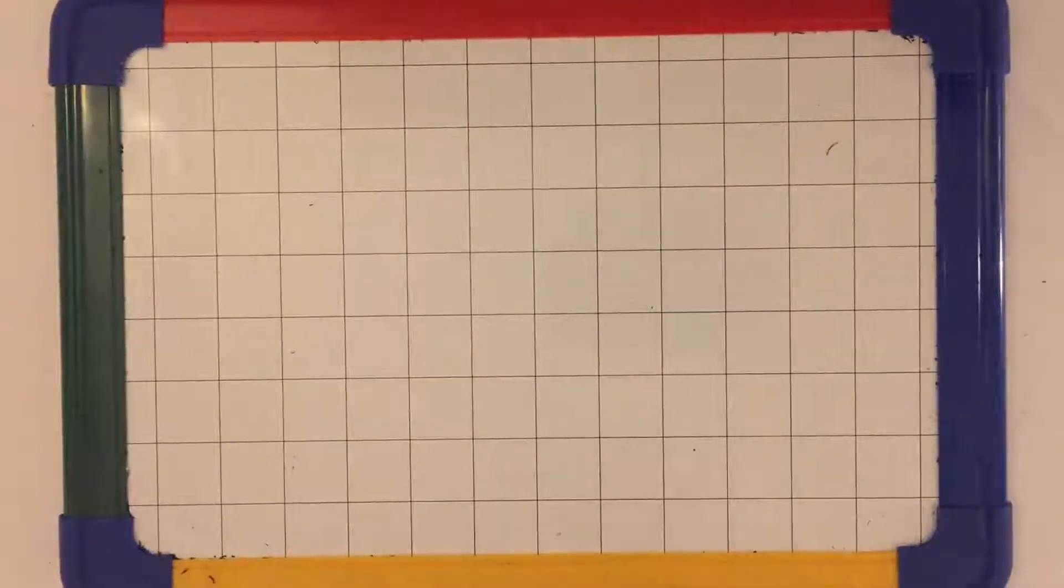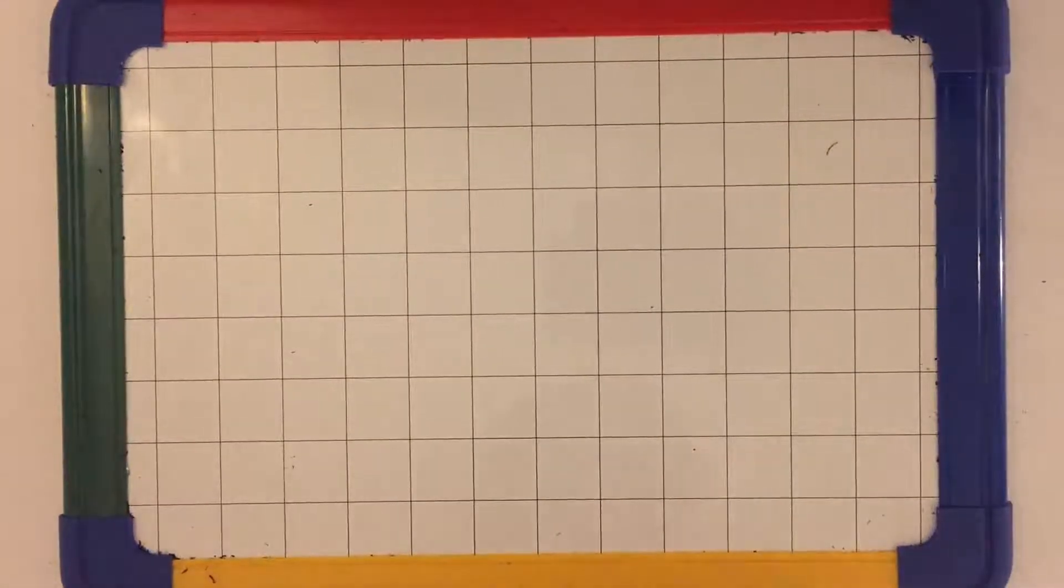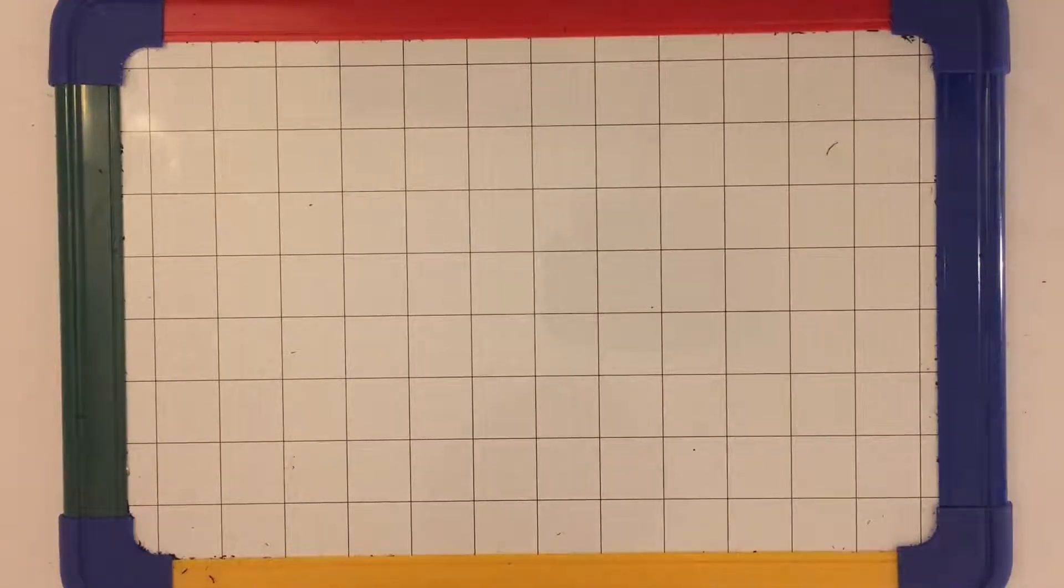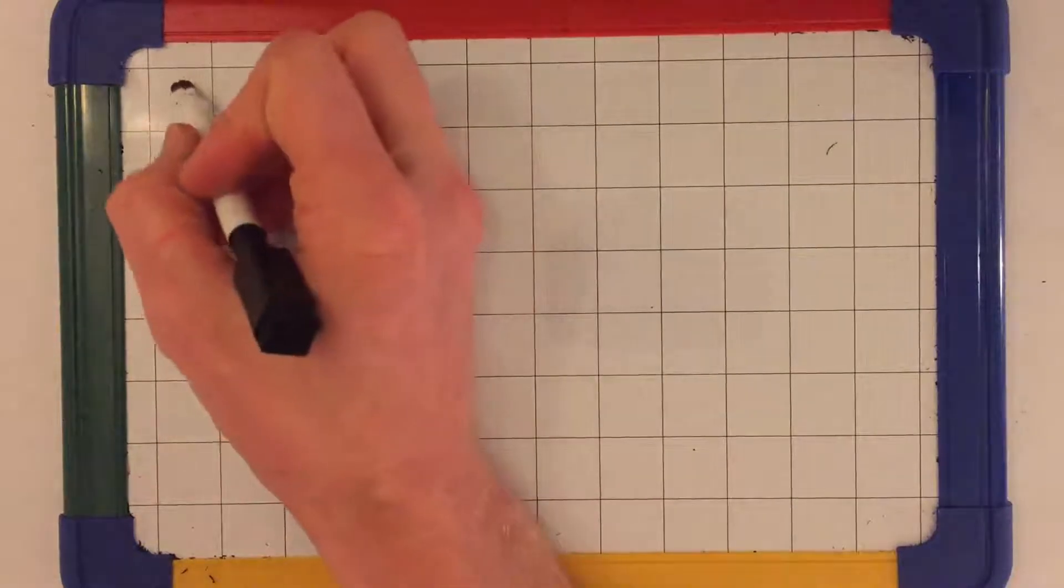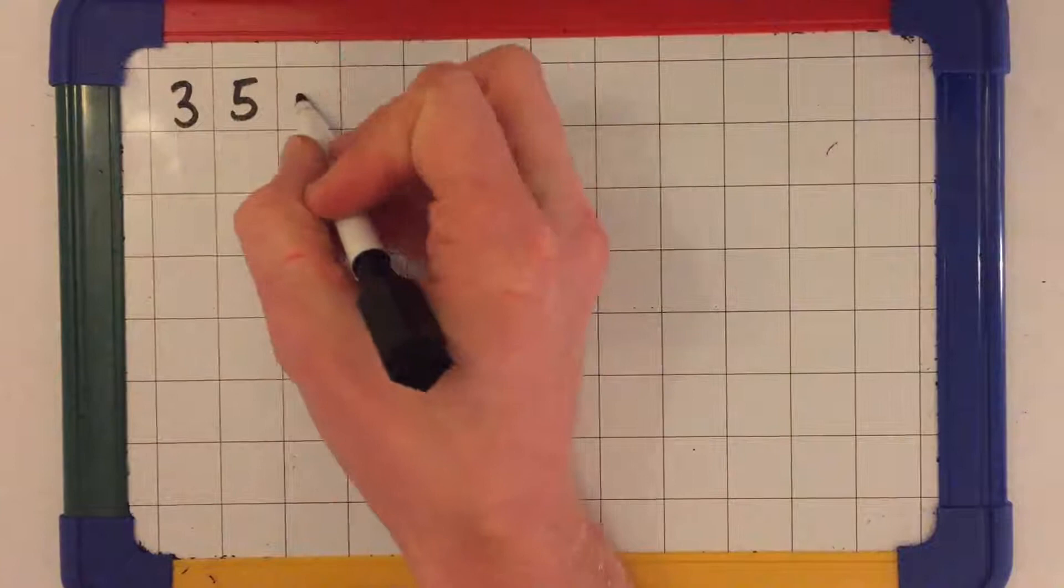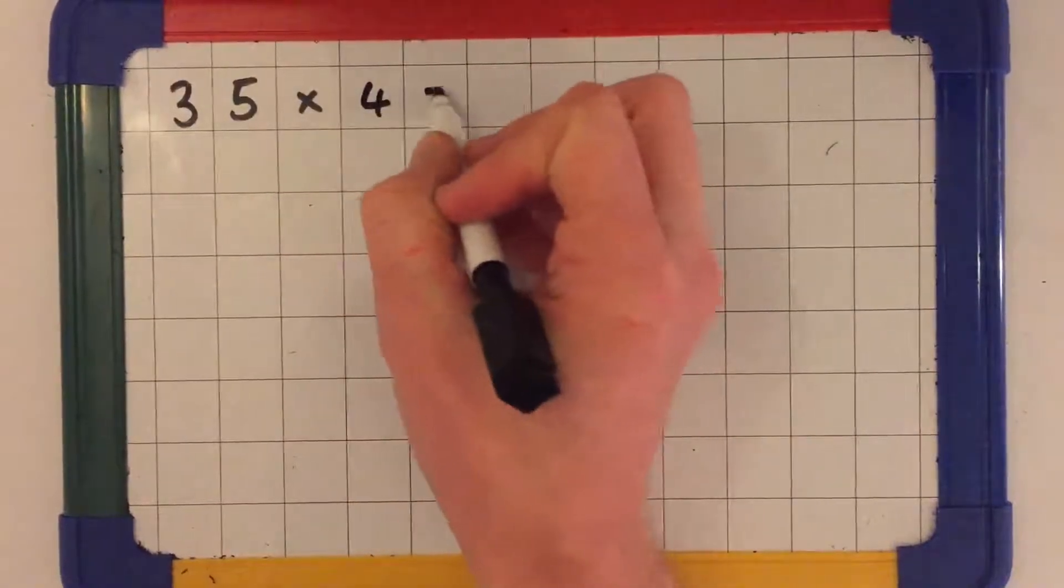In this video we're going to look at multiplying a two-digit number by a one-digit number. We're going to look at solving an equation like this using the grid method. The equation we're going to solve is 35 multiplied by 4.